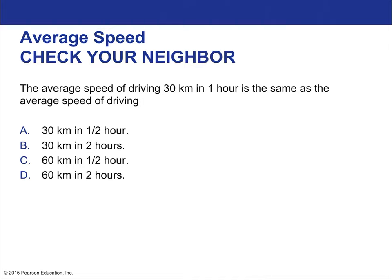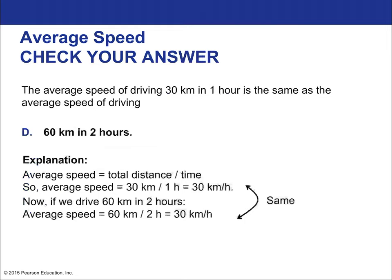Quick check: the average speed of driving 30 kilometers in one hour is the same as the average speed of driving 60 kilometers in two hours — because we just multiplied both the numerator and denominator by 2, so the result is the same.